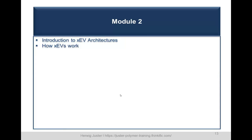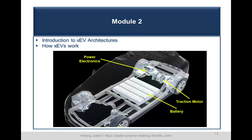Module two offers a deep dive into the electric vehicle architecture — how electric cars work. We will discuss the three major architecture parts: the battery, the traction motor, and the power electronics, including all the parts involved and their functions.